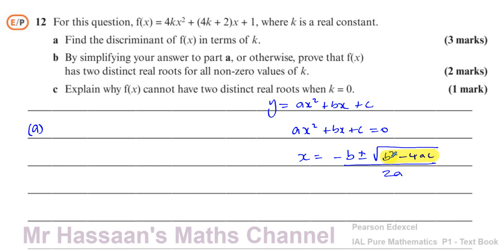If the discriminant is positive, you get minus b plus a number and minus b minus a number over 2a, giving two different solutions — two roots. If it equals 0, you get minus b over 2a in both cases, giving one repeated root. And if b squared minus 4ac is negative, it's undefined and you get no roots. So the discriminant discriminates between how many roots the quadratic has.